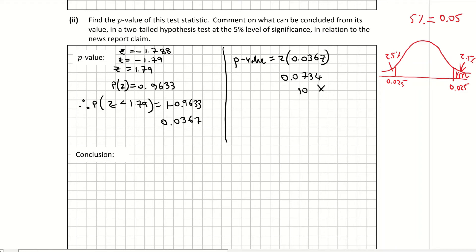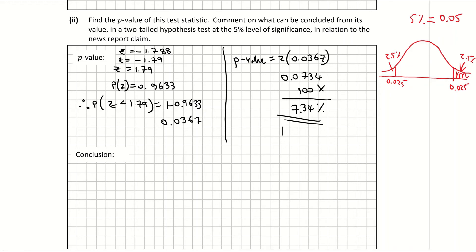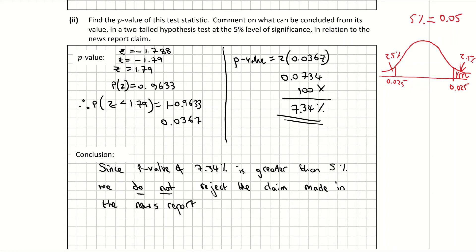My conclusion: since the p-value of 7.34% is greater than 5%, we do not reject the claim made by the news report. If your p-value is less than 5%, then you do reject. So you're looking for that 5% level of significance.